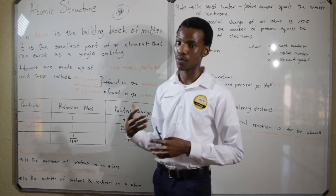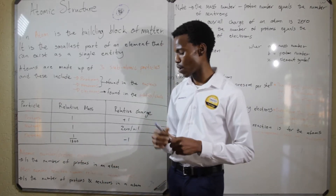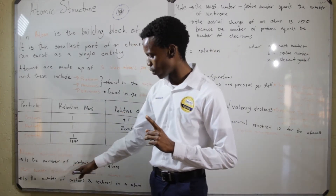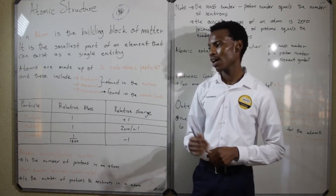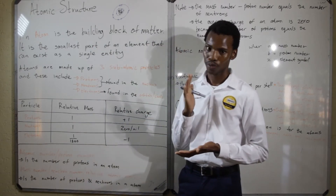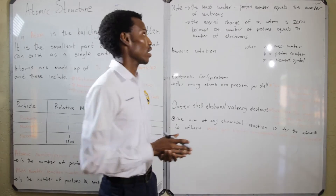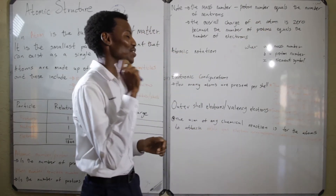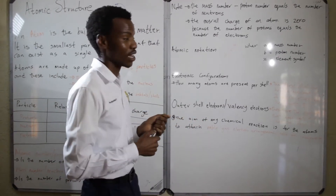The other thing that you need to know is just a couple of terminologies, which include the atomic number or the proton number — and this is the number of protons that are present in an atom. The other thing you need to know is the mass number or the nucleon number, which is sometimes called the relative atomic mass, and it is defined as the number of protons and neutrons in an atom. When you take the mass number and subtract the proton number, you will always get the number of neutrons available in an atom.